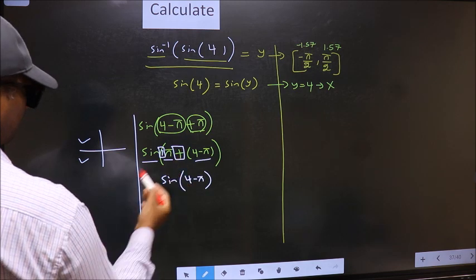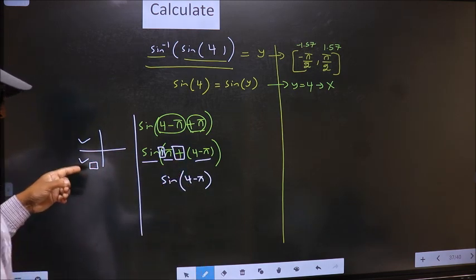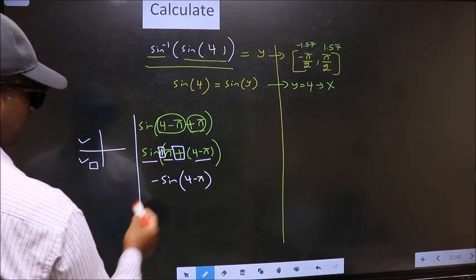Here we have plus. That means angle lies in the third quadrant. And in the third quadrant sin is negative. So put negative.